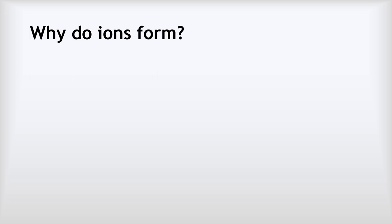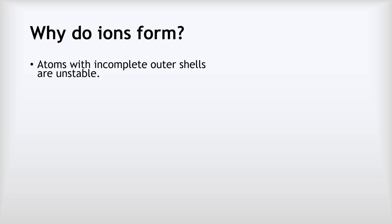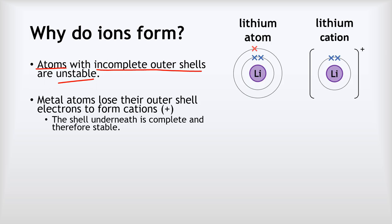So why do ions form in the first place? Atoms often have incomplete outer shells, which makes them unstable. To become stable, they must change — and that's what happens when they form ions. Metal atoms often have one, two, or three electrons in their outer shell. To become stable, they will lose their outer shell electrons, and because they're losing electrons, they will become positive ions — cations. The shell underneath will be complete and therefore stable. We can see that with lithium — the lithium atom has lost its outer shell electron to form the lithium ion with that complete shell of just two electrons underneath, and so now it is stable.